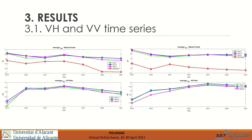The oil palm VH backscattering then increases until 2018, where it reaches saturation, leading to a decrease in the following years. For VV, it also increases up to a sub-saturation point in 2019, but nevertheless the backscattering remains more stable once this point is reached, exhibiting higher backscattering values than in forest areas.